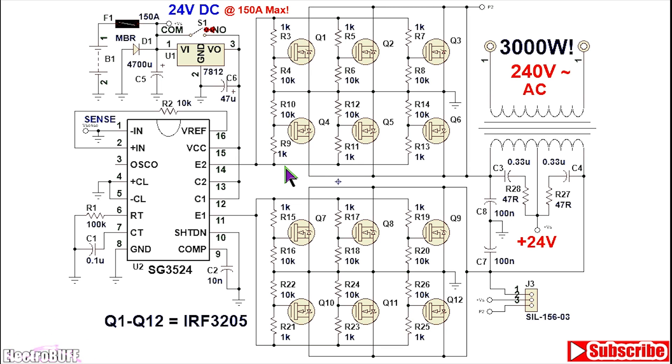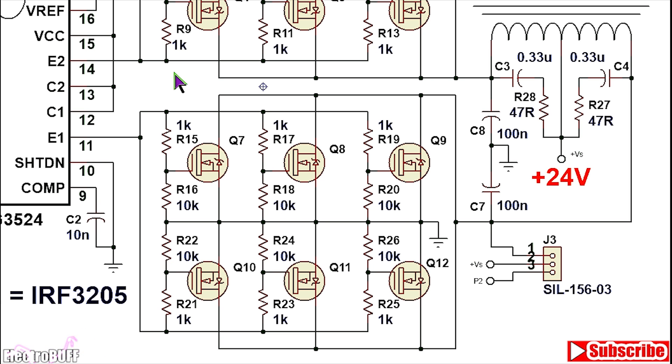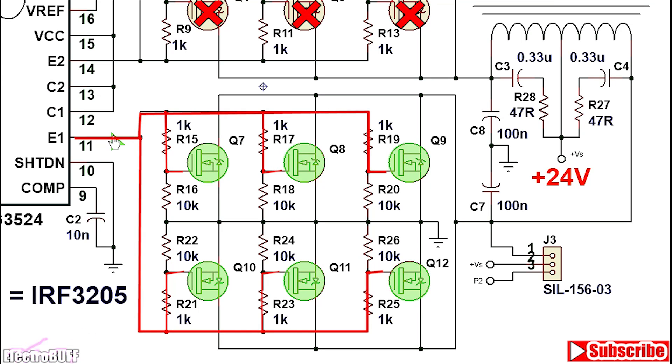For each MOSFET also has a gate source discharge resistor which is 10 kilo ohms and at least a quarter watt. The gate drive resistors are also rated for 1 kilo ohms and at least a quarter watt. Let's say in the first cycle you have a high output at E1 or pin 11 of the IC, and so this will pull up the gates of the MOSFETs Q7, Q8, Q9, Q10, Q11 and Q12.